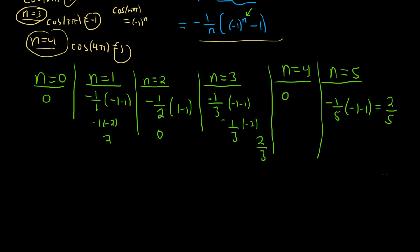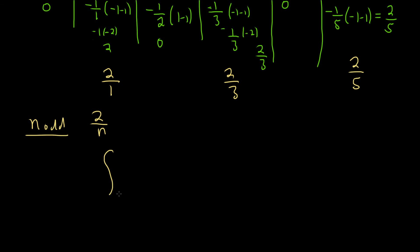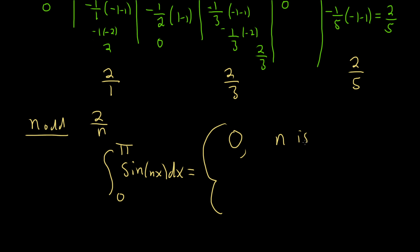There's a clear pattern here. When n is 1, we get 2 over 1; when n is 3, we get 2 over 3; when n is 5, we get 2 over 5. So when n is odd, the answer is 2 over n. The final answer is: the definite integral from 0 to pi of sine of nx dx equals 0 if n is even, and 2 over n if n is odd.